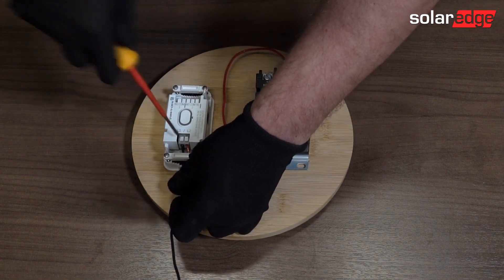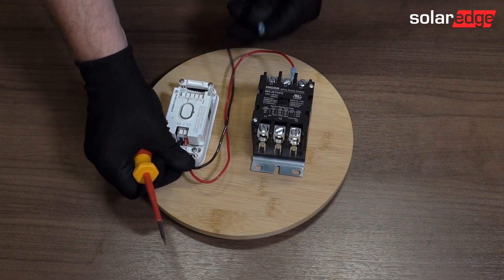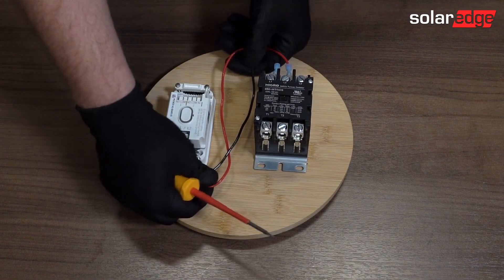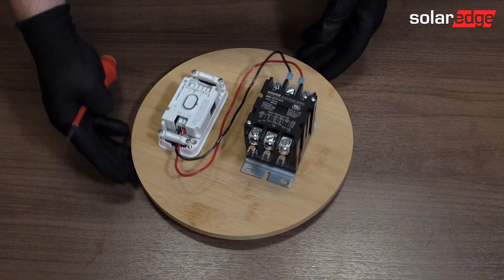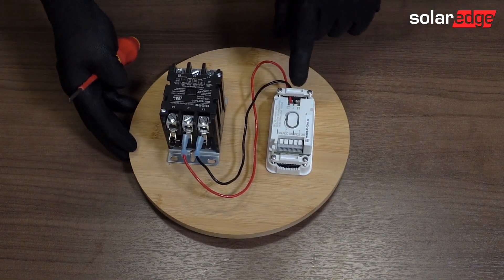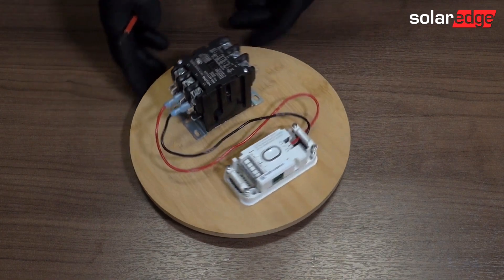Rinse and repeat with line one. Push down, manage my wire. Okay, so now we have line one and line two connected on the power supply supply of the load controller, and the power supply, the supply side of the contactor.